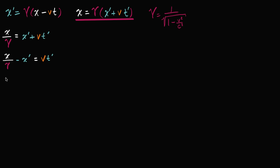So we are going to get x over gamma v, minus x prime over v, and that is going to be equal to t prime. So now we've solved for t prime in terms of gamma, v, x, and x prime. But now we can take that x prime and replace it with gamma and all of this business right over here, so let's do that.